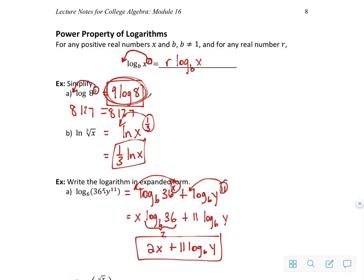From this product to this sum. And then I used my power rule to pull out the exponents. And then on the last step, I just simplified log base 6 of 36.